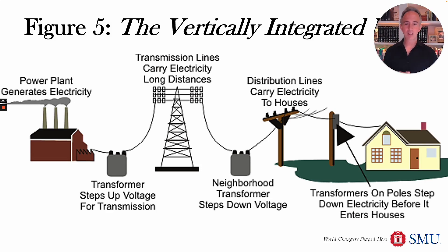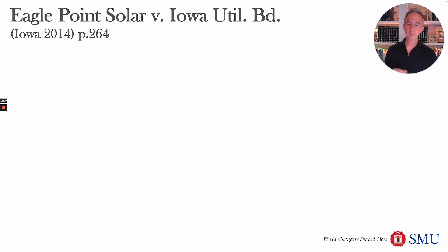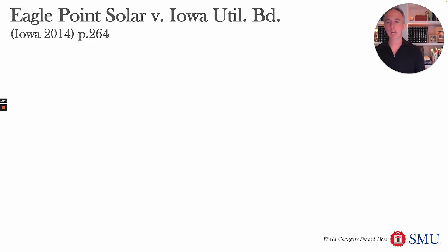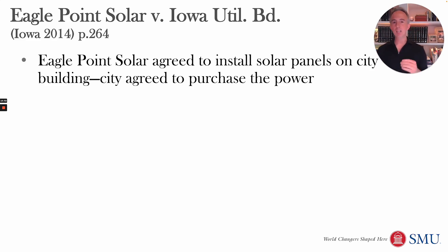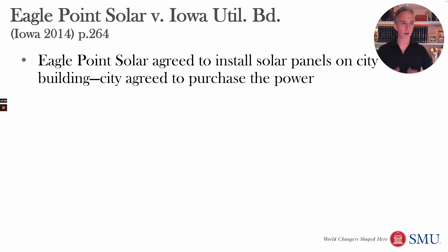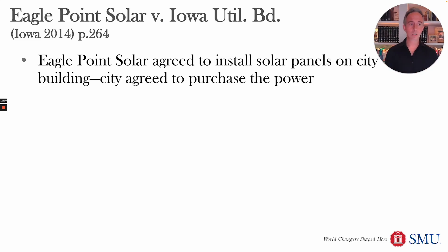This is sometimes called the regulatory compact, and it's at issue in Eagle Point Solar v. Iowa Utility Board, an Iowa Supreme Court case from 2014 at page 264. Eagle Point Solar agreed to install solar panels on a city building, and the city agreed to purchase the power. Starting from first principles: why would we object to this? Eagle Point Solar producing solar energy and selling it to the city — why would we interfere in this private market transaction?